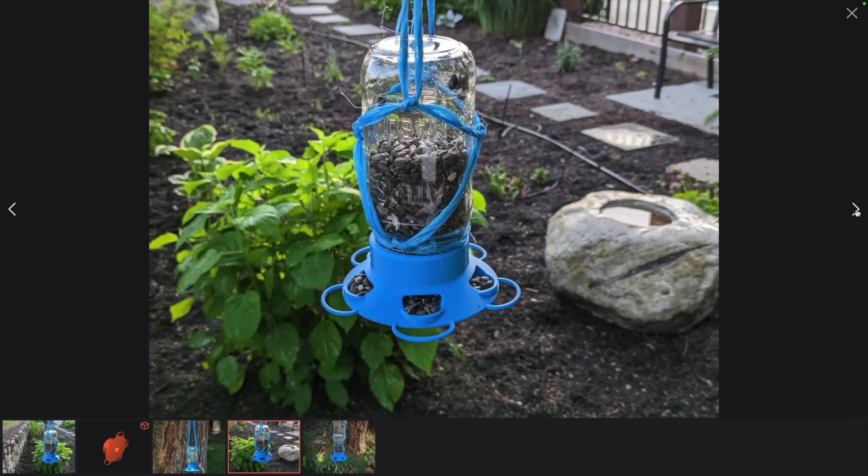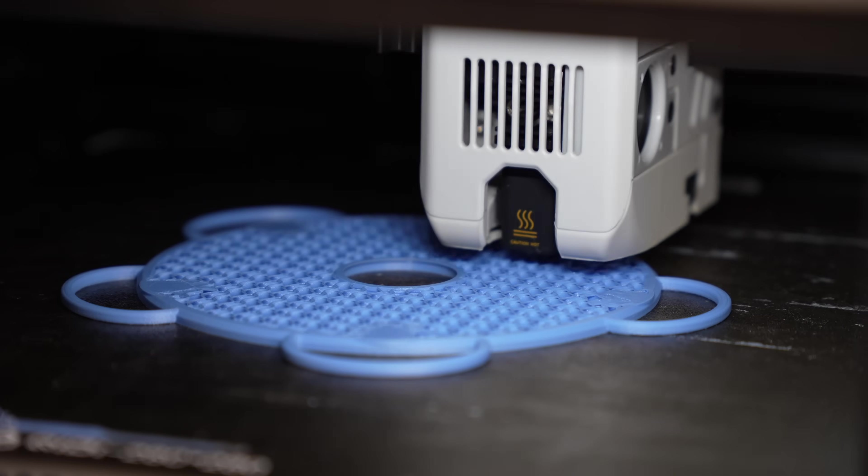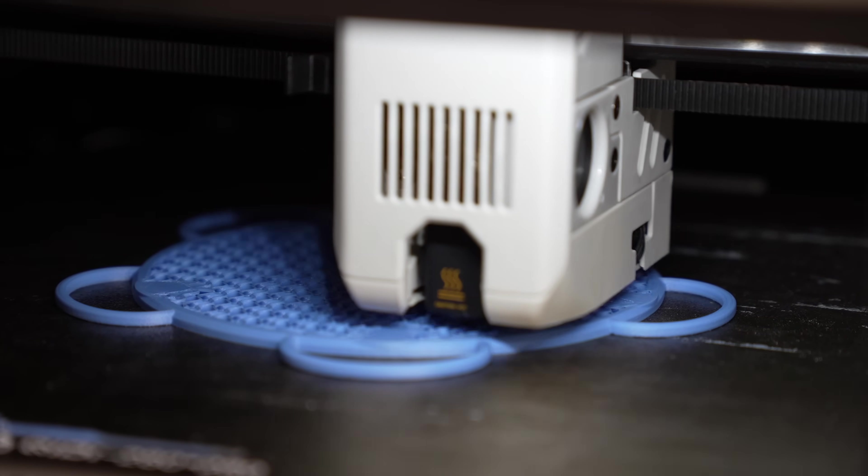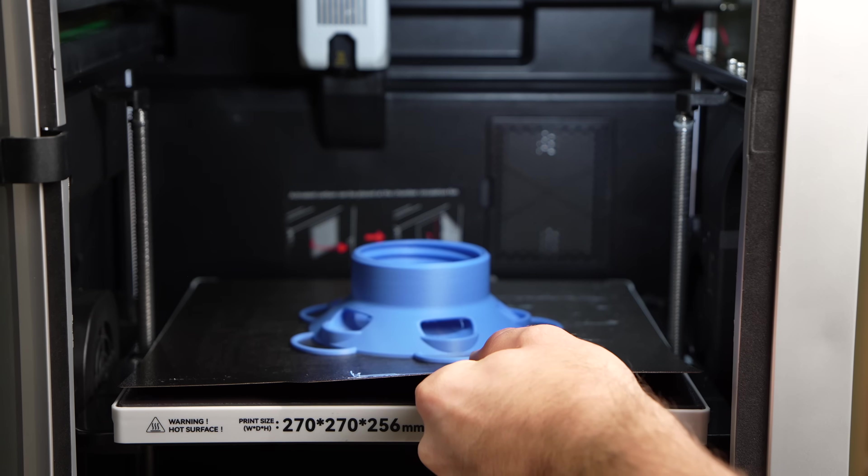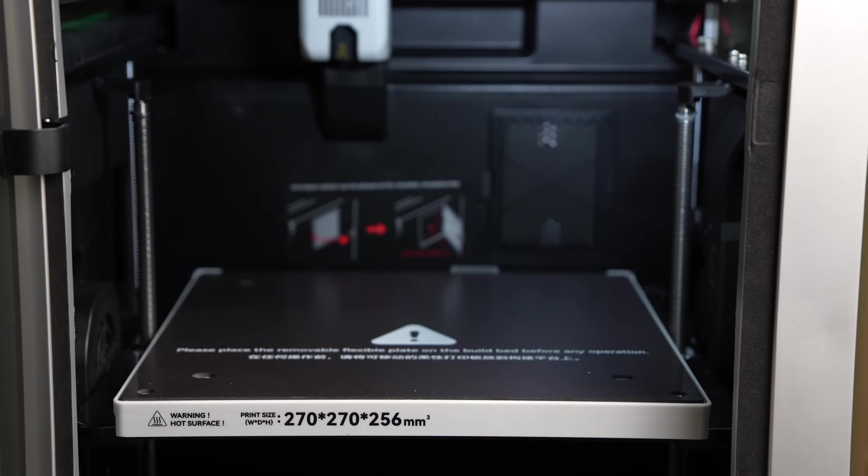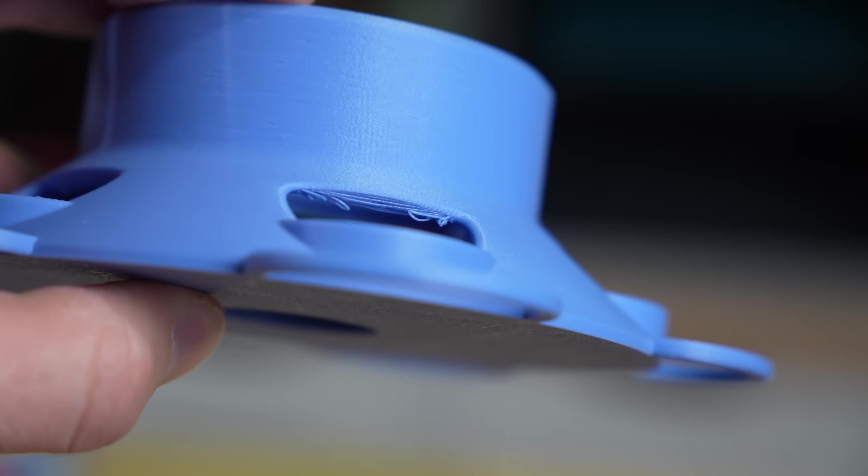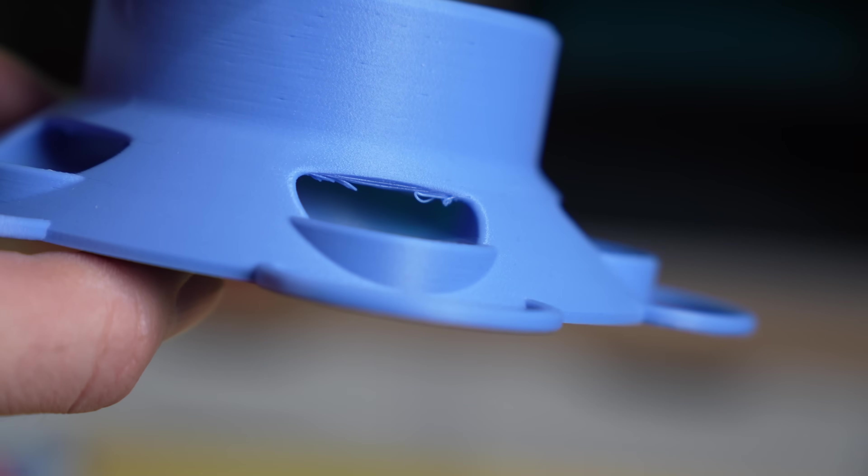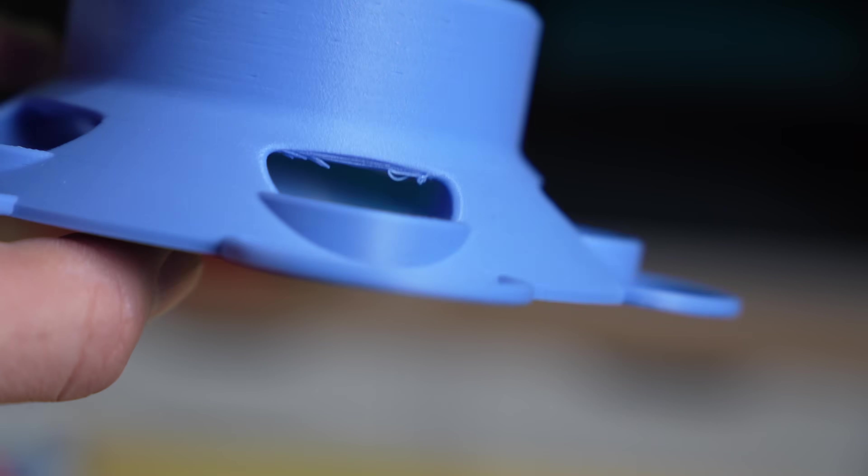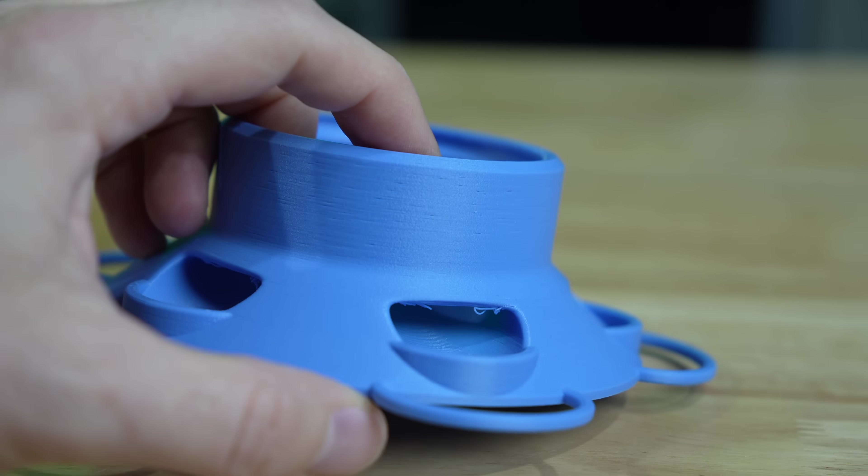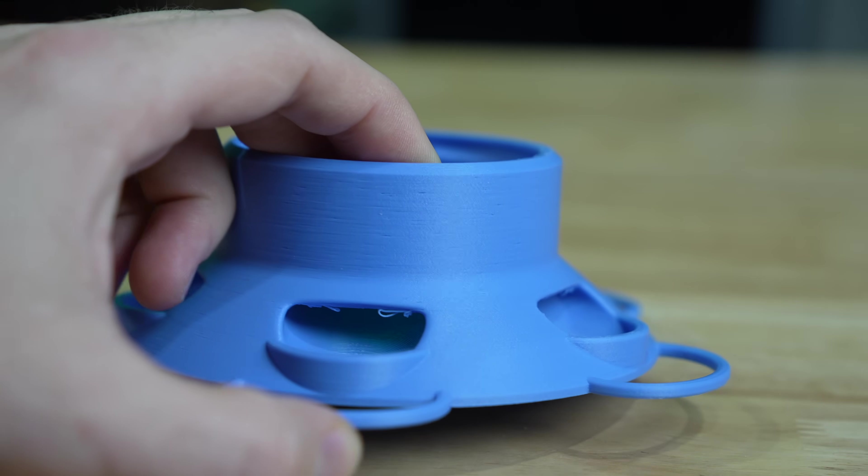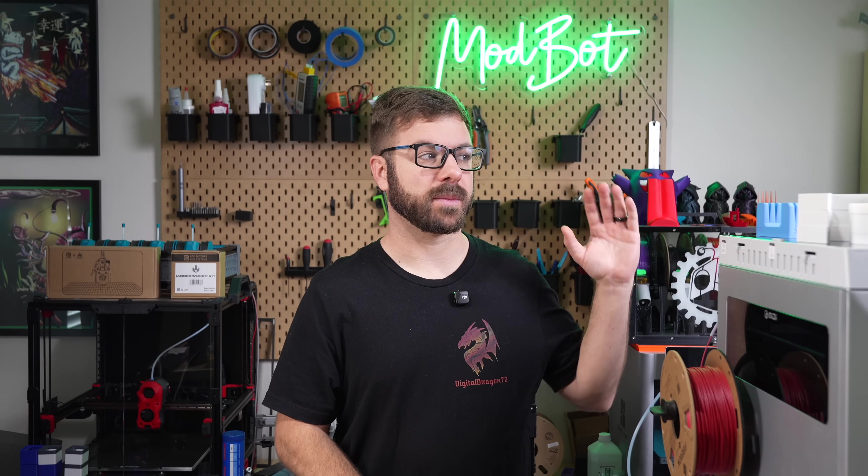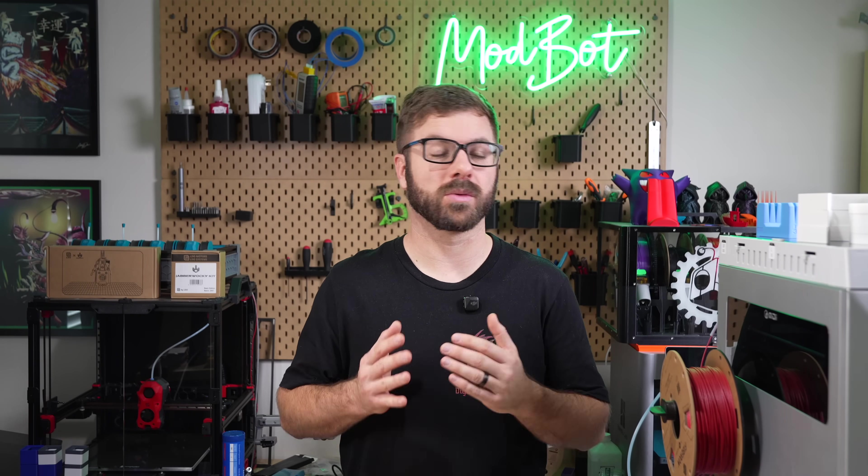Next, I printed out a mason jar bird feeder. What I was really curious about with this one was how the printer and the material would handle the bridging, especially because the layer cooling was set so low for this material. There was some slight sagging on those bridges, which I absolutely expected, but overall I was really happy with the results. On this print, there was also some imperfections on the outer wall, but at this point, since I had dropped the flow rate as well as made sure the filament was dry, I wasn't entirely sure what the cause was.